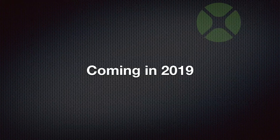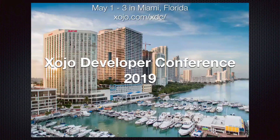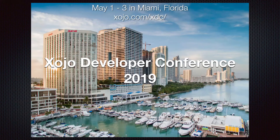One thing I can confirm coming in 2019 is the Zojo Developer Conference. This year it'll be in Miami, Florida, May 1st through the 3rd — I'm told it's a great time of year to be in Miami. The hotel is a Marriott right on the water with gorgeous views. Room rates are $149. We hope to see lots of people at the Zojo Developer Conference in Miami, Florida.